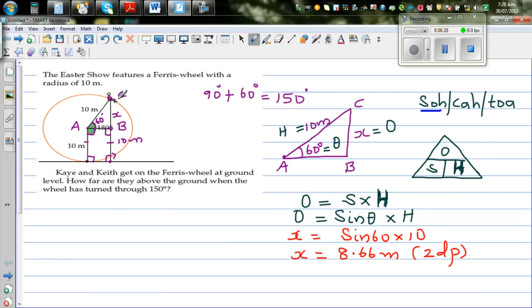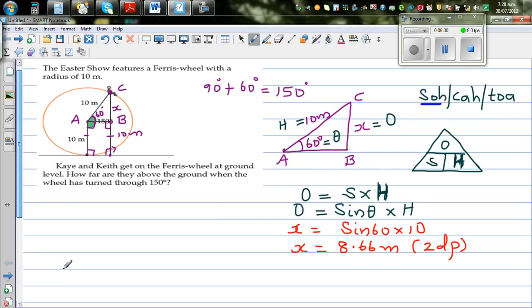Okay, now the question is not to find X, but to find the height of Kay. So you can say the height of Kay and Keith when they have turned 150 degrees would be 10 plus X. That is 10 plus 8.66, which is 18.66 meters. So they are 18.66 meters above the ground when the Ferris wheel has turned 150 degrees.